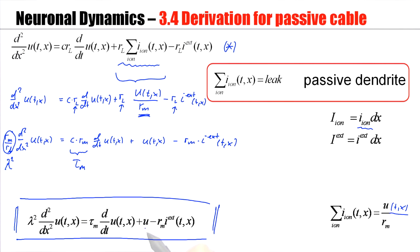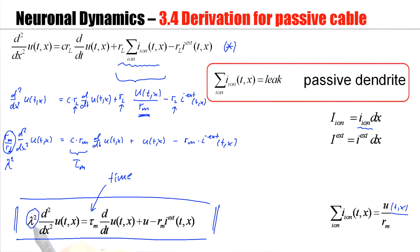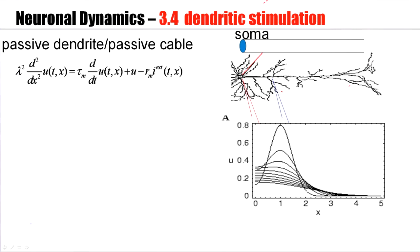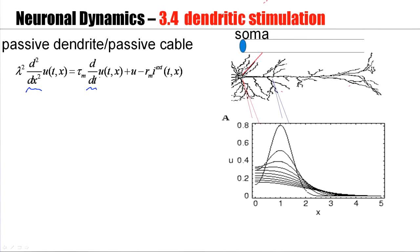U is in units of voltage. R times I is also units of voltage. This term is the derivative with respect to time, therefore tau_m is a time constant. This term is the second derivative with respect to space of the voltage. The right-hand side has units of voltage, therefore lambda squared has units of space squared — lambda is a length. So now we have a partial differential equation with two different derivatives: one with respect to space and one with respect to time.